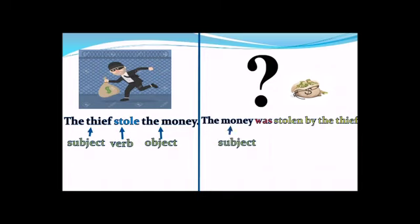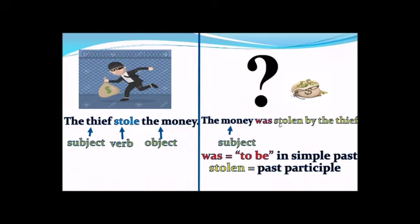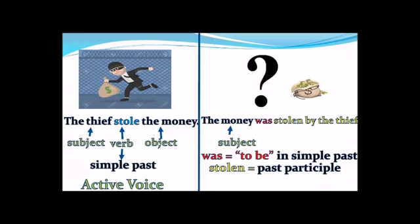The passive sentence becomes: 'The money was stolen by the thief.' In the first sentence, the subject was 'the thief' and the money was the object. In the second sentence, 'the money' becomes the subject. We added the verb 'to be' in the simple past ('was') and the verb 'stole' becomes the past participle 'stolen.' We use simple past because the original sentence is in the simple past.